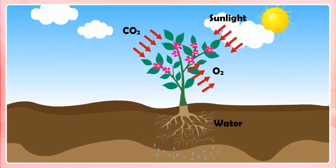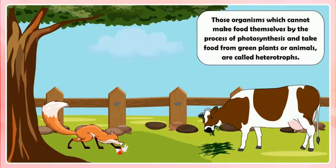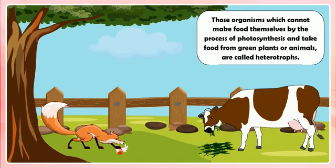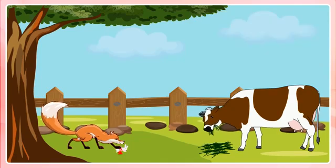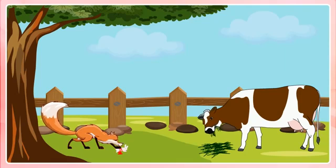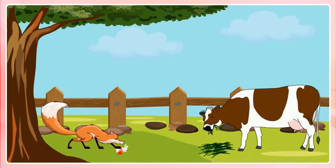For example, green plants. Heterotrophs are those organisms which cannot make food themselves by the process of photosynthesis and take food from green plants or animals. They are called heterotrophs and their mode of nutrition is called heterotrophic. All the non-green plants and animals including human beings are heterotrophs.